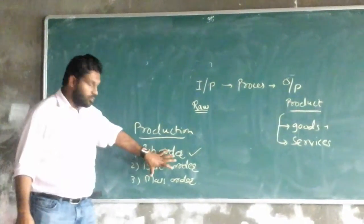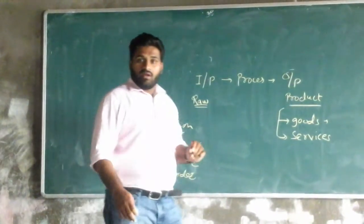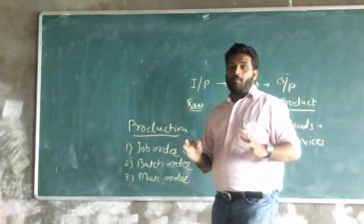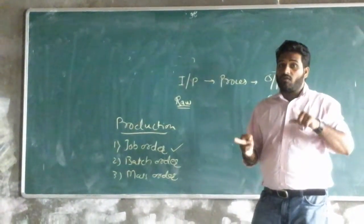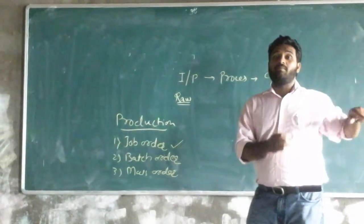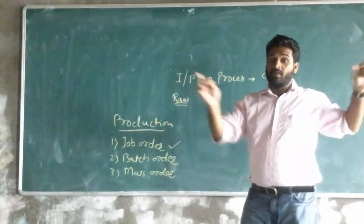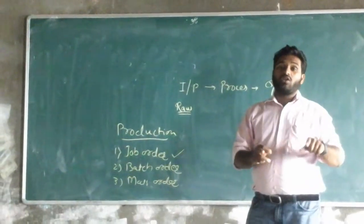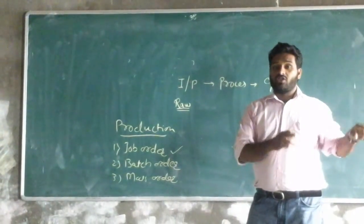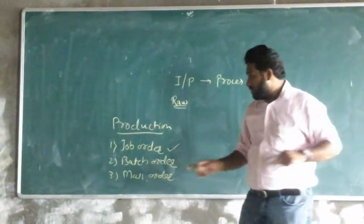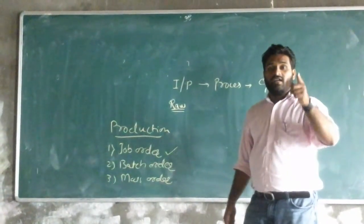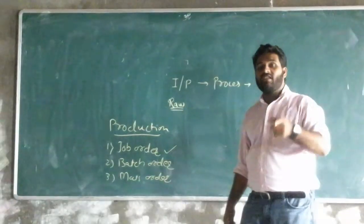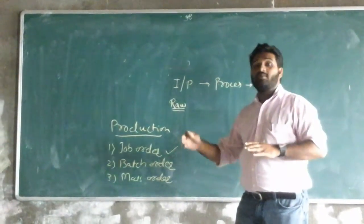Now, next is the batch order production industry. What do you think about the production of an automobile? The production of an automobile, though it is produced in numbers, these are called as batch order production industry because its design will be changing after some duration of time.